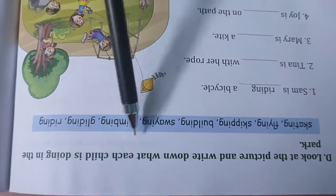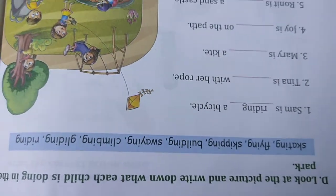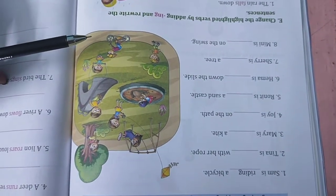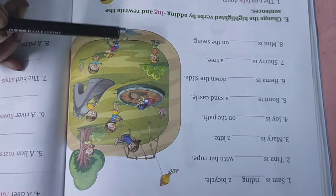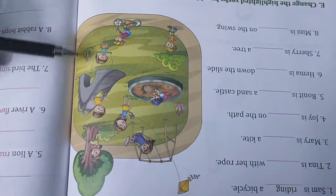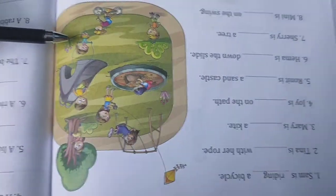Look at the picture and write down what each child is doing in the park. Sam is riding a bicycle. Tina is skipping.